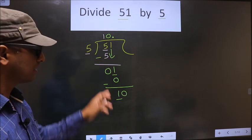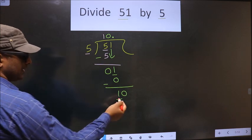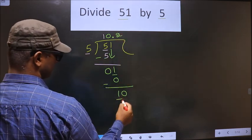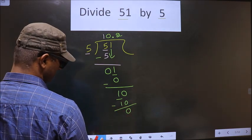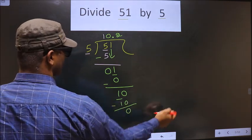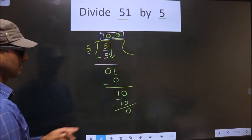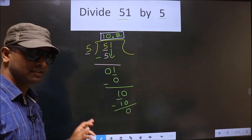Okay, now here we have 10. When do we get 10 in 5 table? 5 times 2 is 10. So now you subtract, you get 0. So this is our quotient. Am I clear?